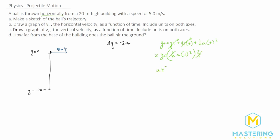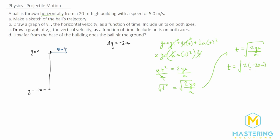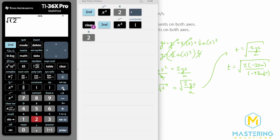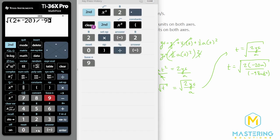We have acceleration times time squared equals 2 times y-final. Dividing both sides by acceleration gives t squared equals 2 times y-final divided by acceleration, and taking the square root gives t equals the square root of (2 times y-final divided by acceleration). Plugging in: t equals the square root of (2 times negative 20 meters divided by negative 9.8 meters per second squared). The time the ball is in the air rounds to 2 seconds.